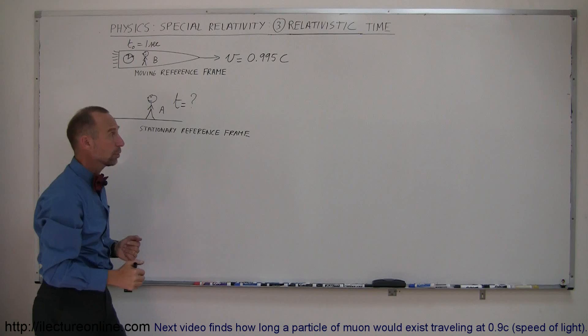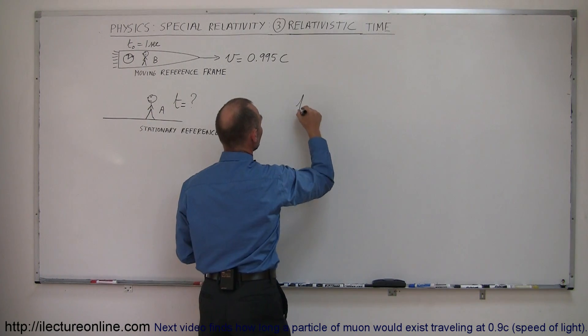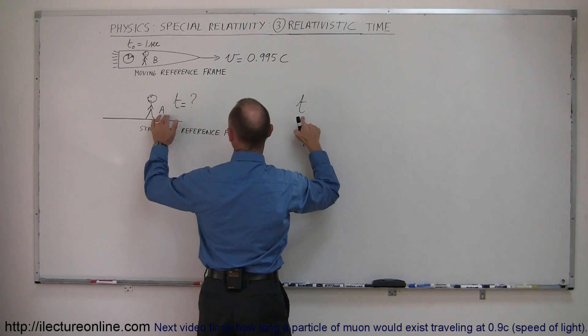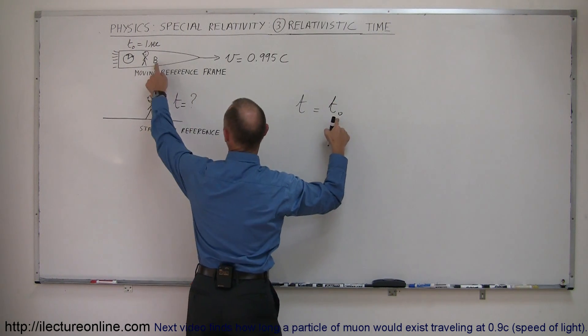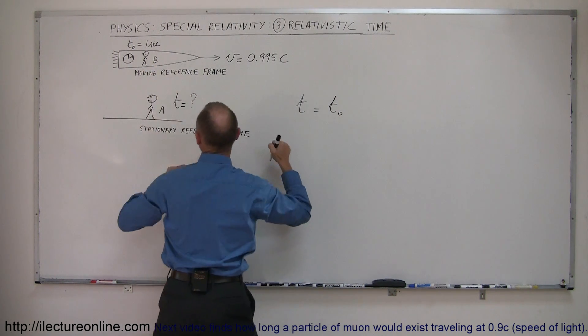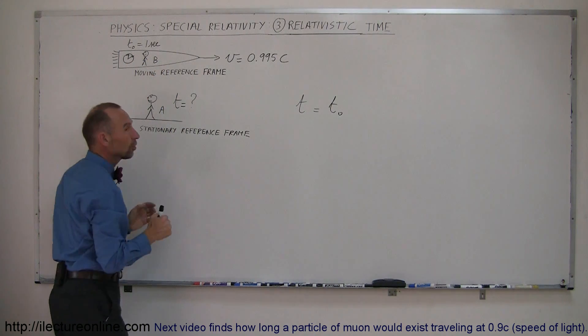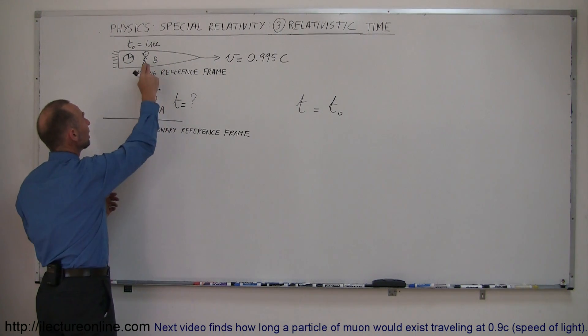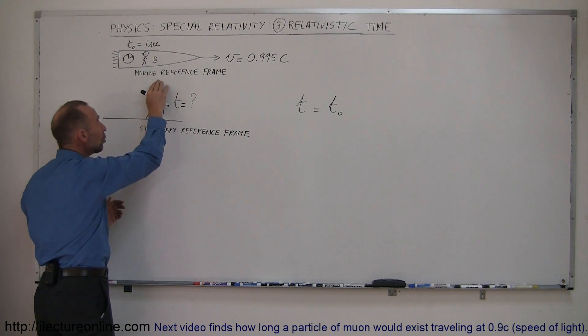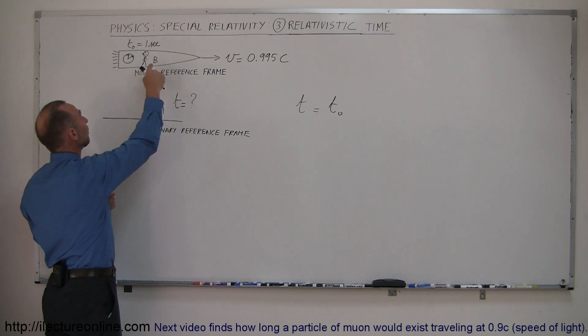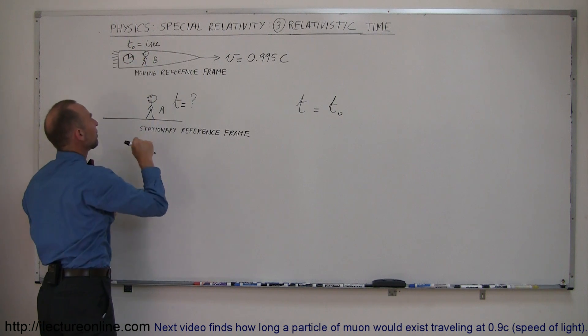How do we figure that out? The equation we're going to use is: time as observed by Observer A equals T₀, as observed by Observer B, who is stationary in regards to the clock we're measuring. Since B is stationary in regards to the clock, even though B is moving on the moving reference frame, B sees T₀ as the time.